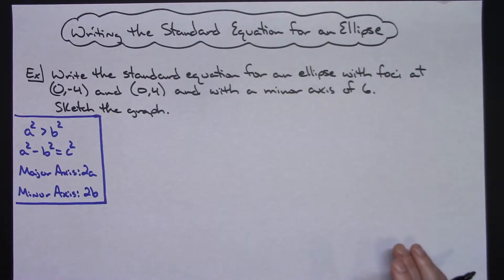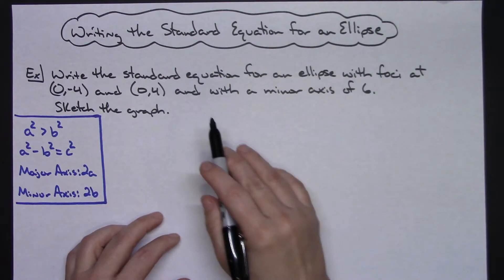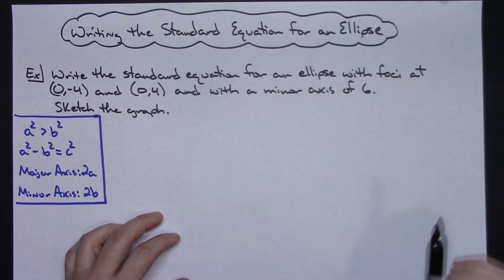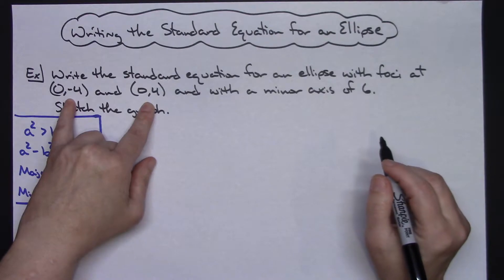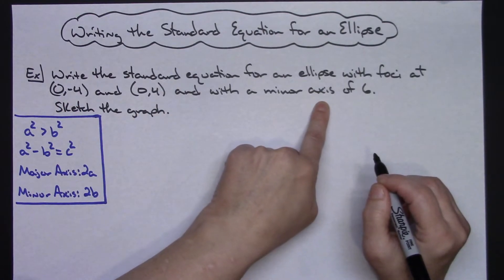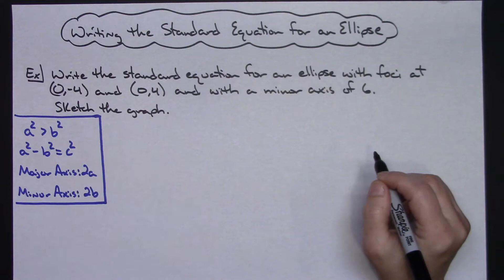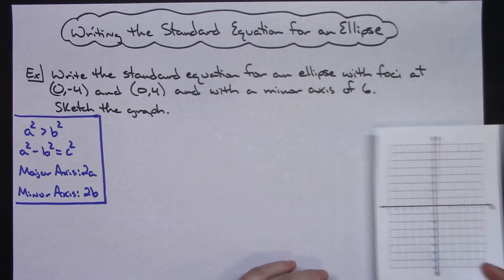Now in this first example here, it's going to say write the standard equation for an ellipse that's got a focus at both (0, -4) and (0, 4) and with a minor axis of 6, and then it says sketch the graph. So we're going to probably need some graph paper here.